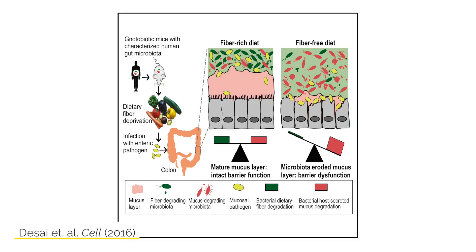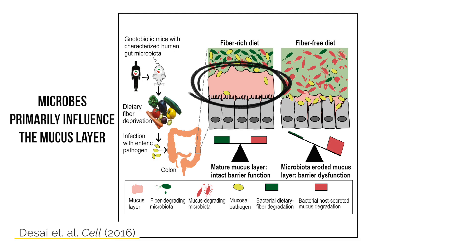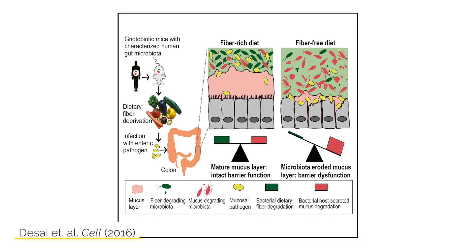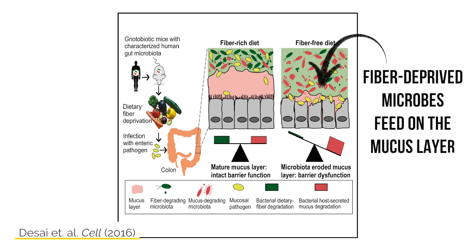The microbes primarily affect the mucus component of this, because if we don't ingest enough complex carbohydrates we starve our microbes. The microbes don't just die off when starved — they turn to the mucus layer, which is also made up of these complex sugar molecules, and feed on that mucus layer.